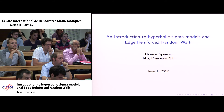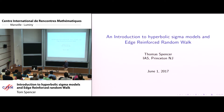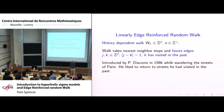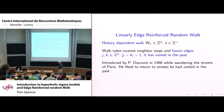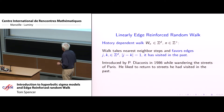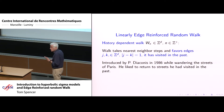I want to begin with just the basic definitions and motivation for what's called edge reinforced walk — which I will refer to as linearly edge reinforced walk. Sometimes you should think of it as linearly edge reinforced walk. So this is a walk which is a history-dependent walk. It's got memory. It's kind of like a nostalgic walk. The walk takes nearest neighbor steps and it favors the edges, the steps it has visited in the past.